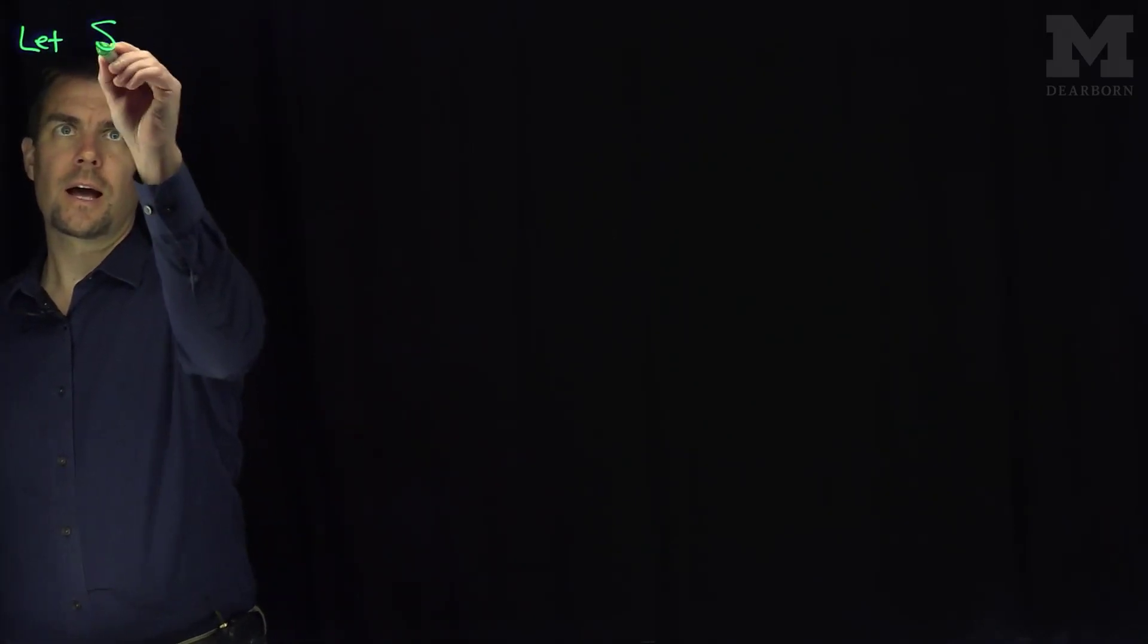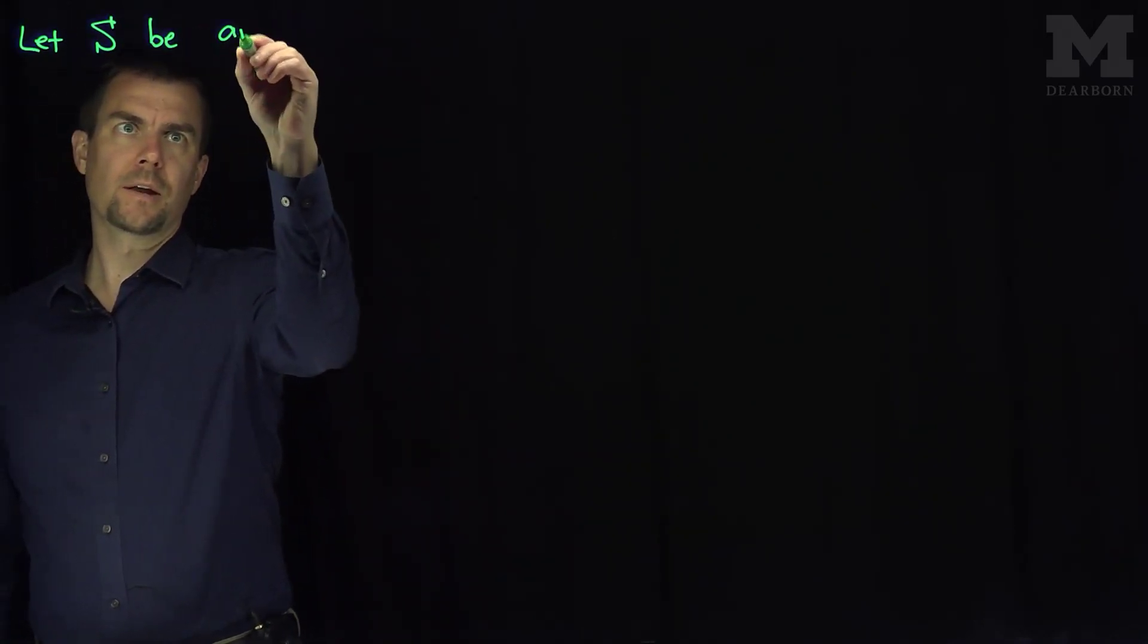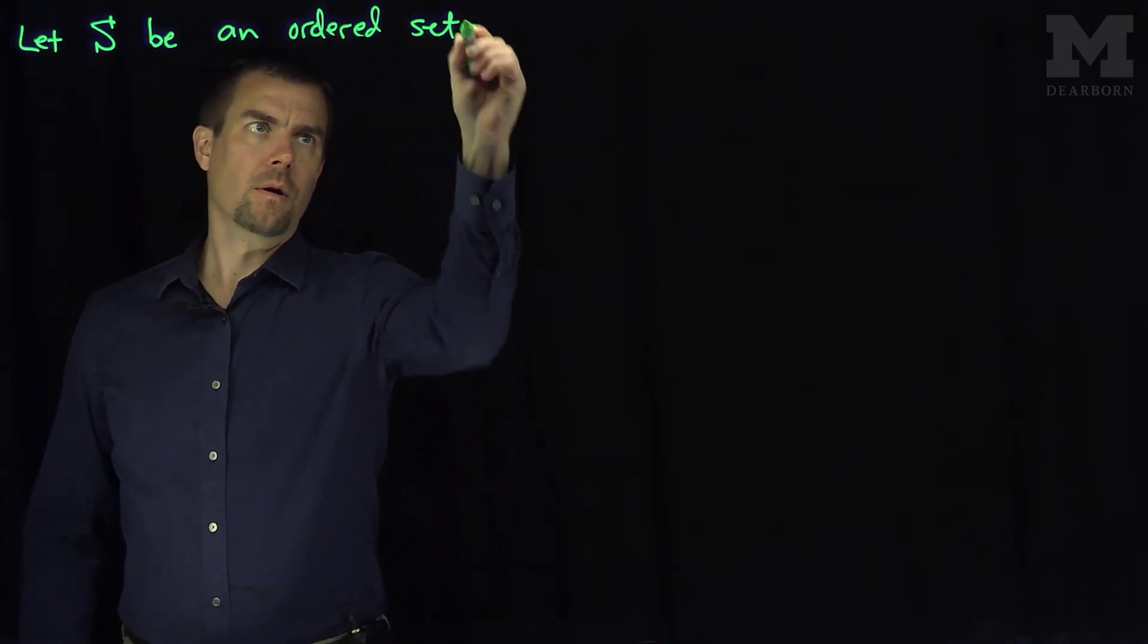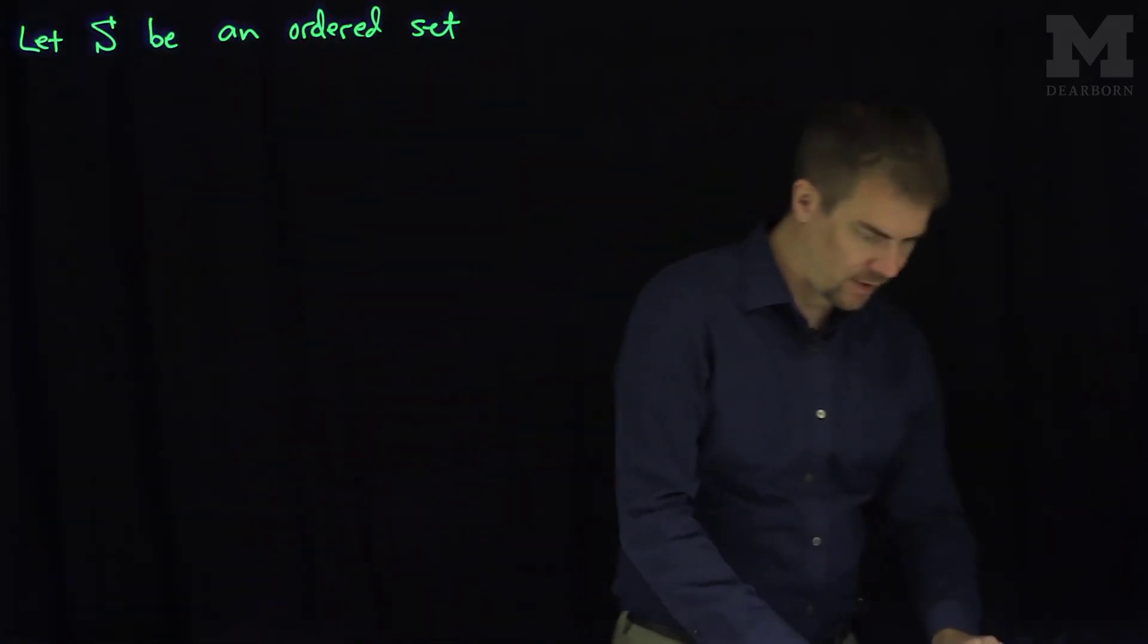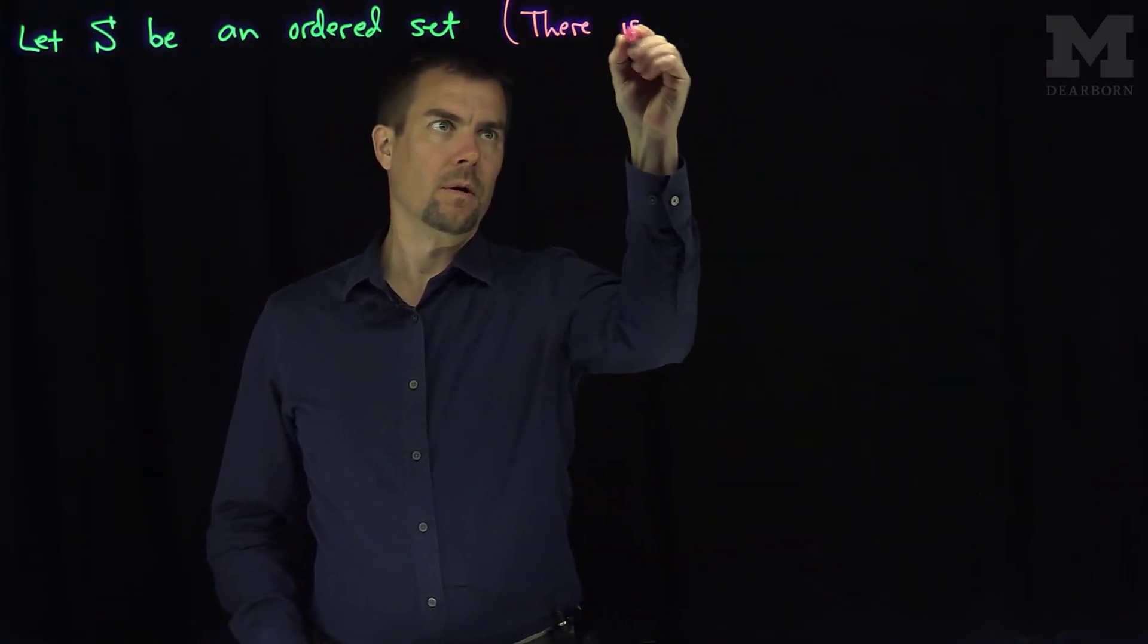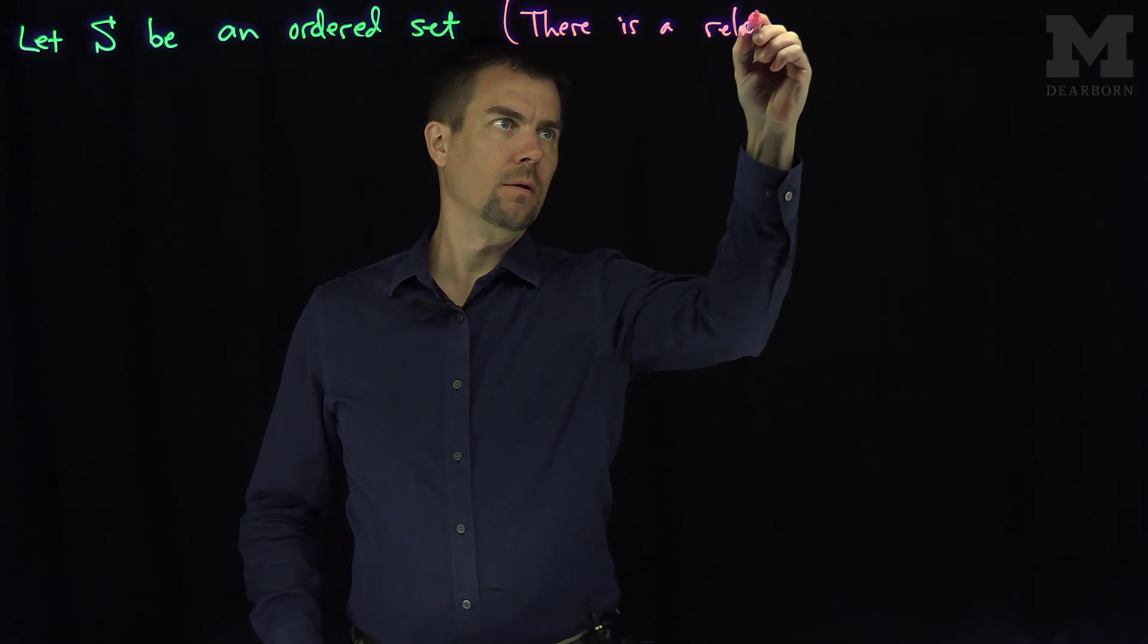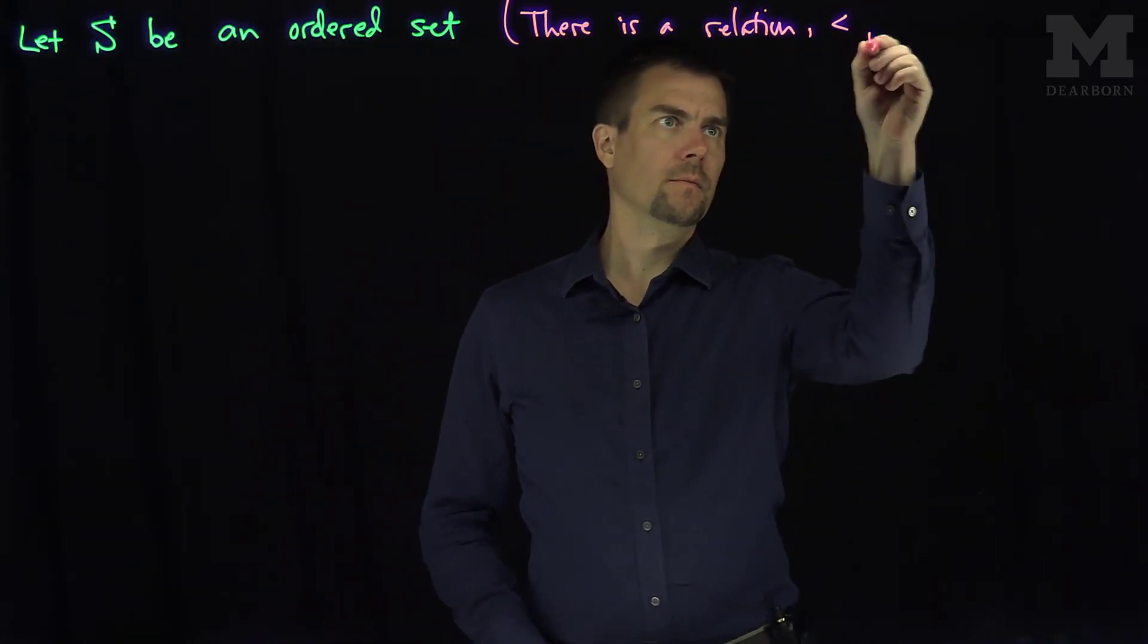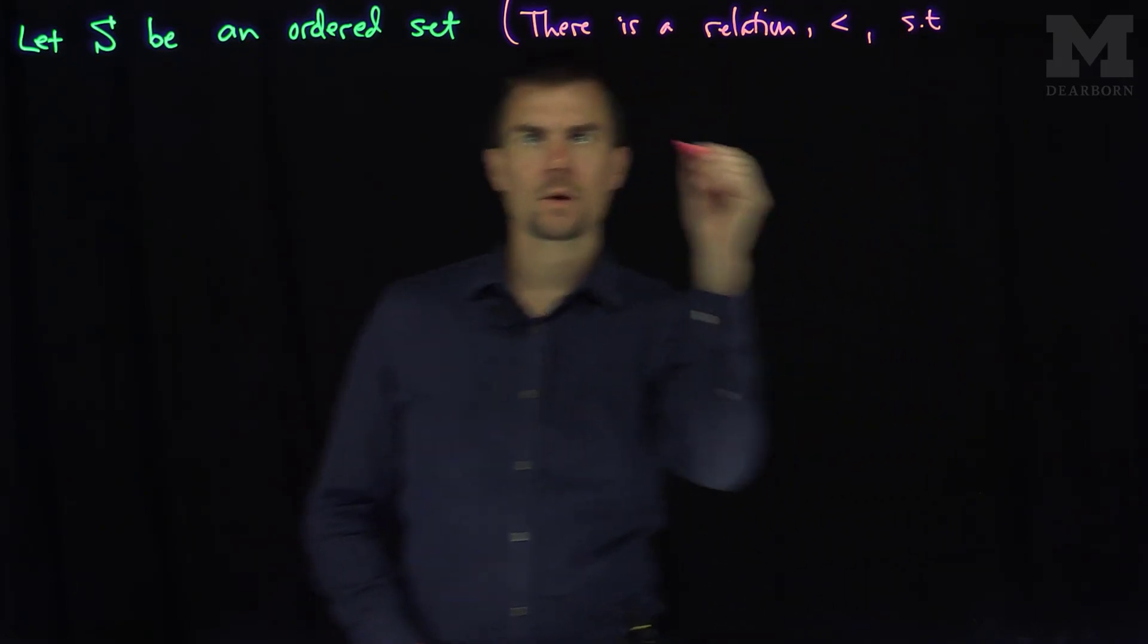If we let S be an ordered set, and of course ordered set simply means that there is a relation, which we'll call just less than, such that two things are true.